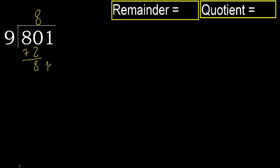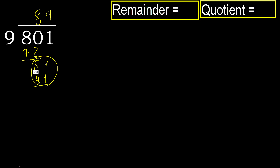Next: 81. 9 multiplied by 9 is 81. OK, is not greater. Subtract.